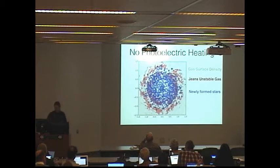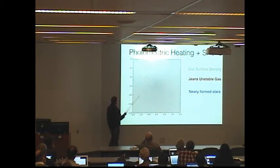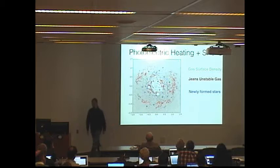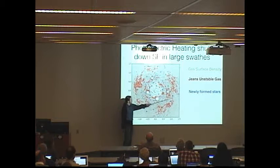Now, if we put in photoelectric heating, you can see that it's much patchier. What's going on here is a star is turning on and heating up all the gas around it and preventing stars from forming. You can also see in this one the supernovae going off. If you look over here, you can see there's no star, star forms, and then it heats up all this gas around it and turns off the star formation there.